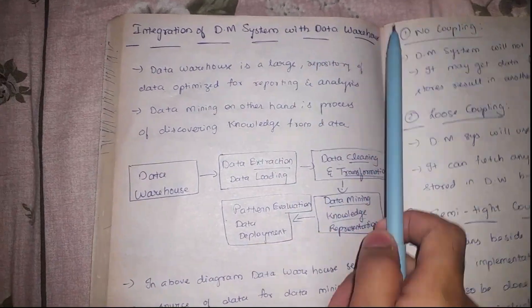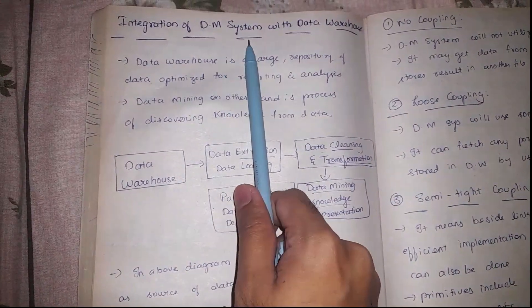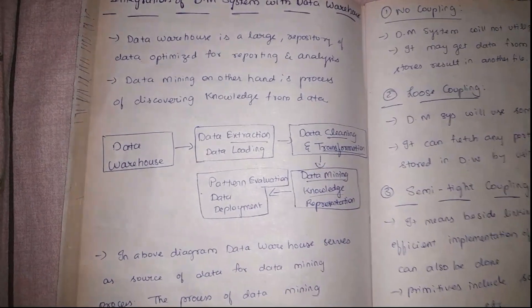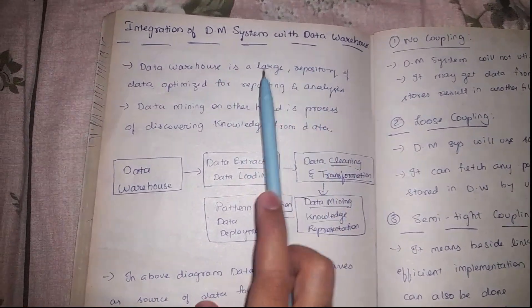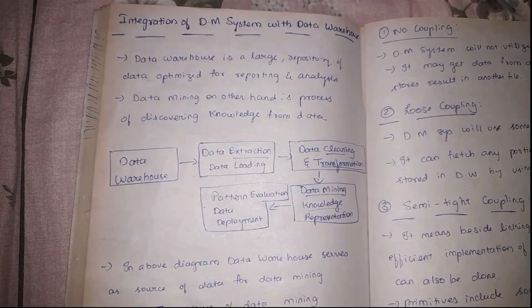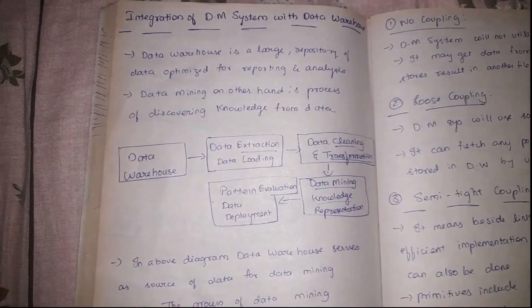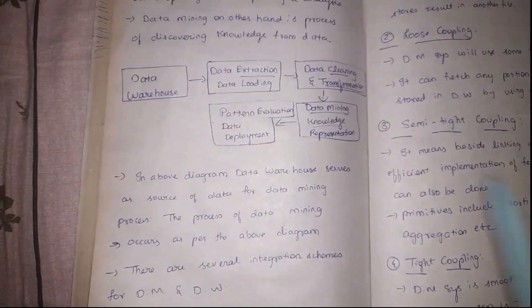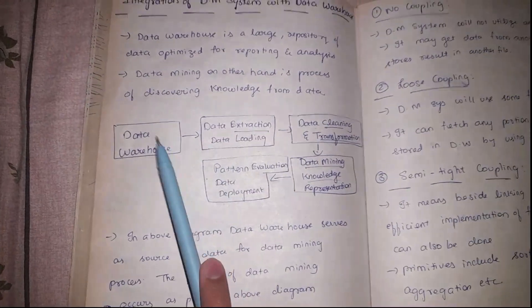In this video we are going to discuss the integration of a data mining system with a data warehouse. Data mining system simply means the process of extracting patterns. The data warehouse is basically a large collection of data used for reporting and analysis. Data mining, on the other hand, is a process of discovering knowledge from a large set of data.